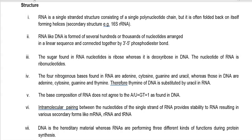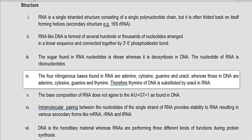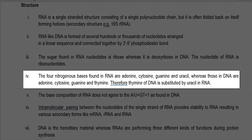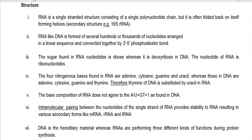The nucleotide of RNA is referred to as a ribonucleotide, whereas in DNA it is referred to as deoxyribonucleotides. The four nitrogenous bases found in RNA are adenine, cytosine, guanine, and uracil. Whereas in DNA, adenine, cytosine, guanine, and thymine are present.